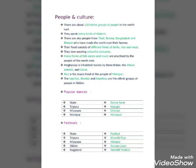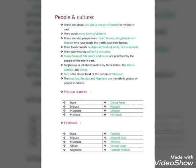Now let's learn about the people and culture of these states. There are about 220 ethnic groups of people in the northeast who speak many kinds of dialects. There are also people from Tibet, Burma, Bangladesh, and Bhutan who have made the northeast their home. Their food consists of different kinds of herbs, rice, and meat, and they love wearing colorful costumes. Many forms of folk dance and music are practiced. Meghalaya is inhabited mainly by three tribes: Khasis, Jaintias, and Garos. Rice is the staple food of Manipur. The Lepchas, Bhutias, and Nepalese are the ethnic groups of Sikkim.